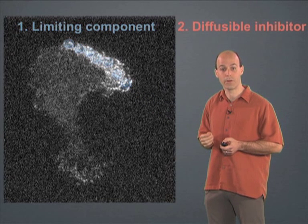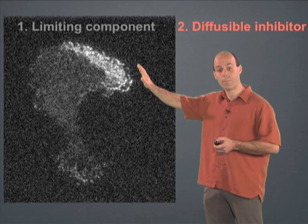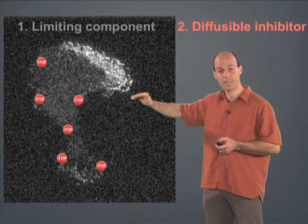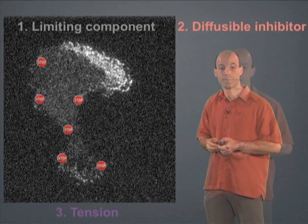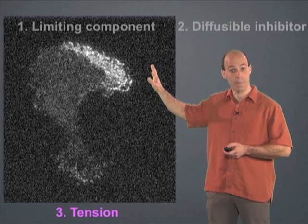A second class of models postulates the existence of a diffusible inhibitor. In this model, the leading edge secretes a poison which diffuses throughout the rest of the cell and prevents activation elsewhere. Prior to our experiments, it was widely believed that one of these two classes of diffusion-based models underlies cell polarity.